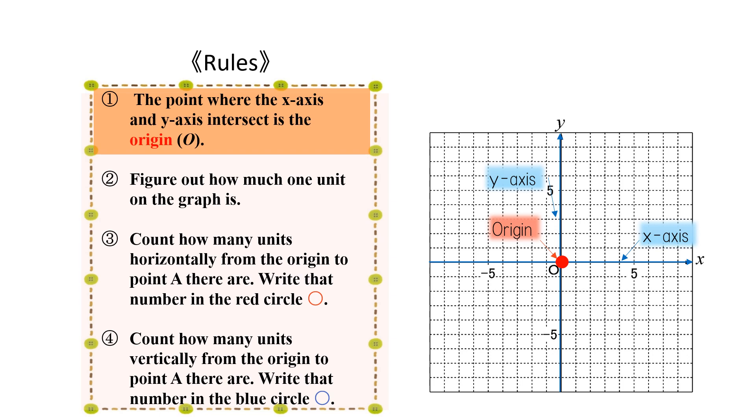The horizontal number line is called the x-axis, and the vertical number line is called the y-axis. The point O where they intersect is called the origin.